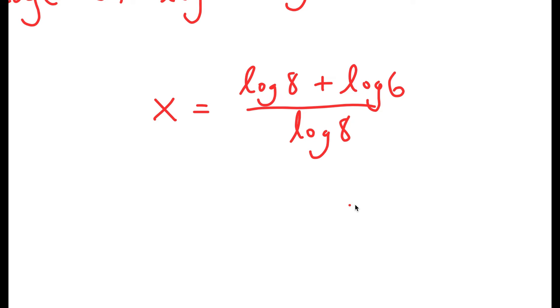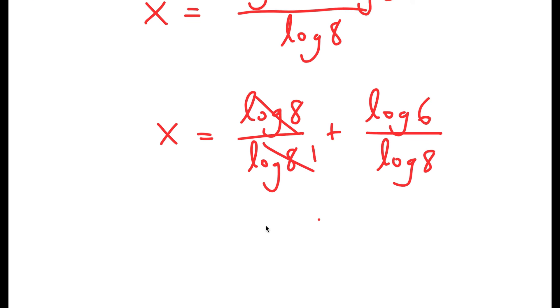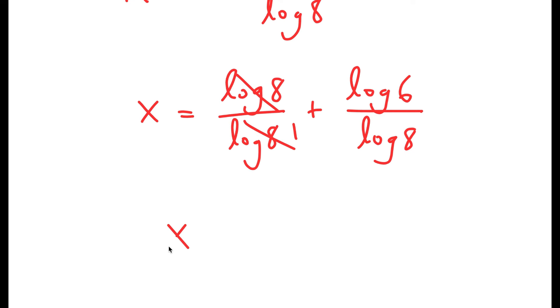Now from here, I can rewrite this as log 8 over log 8 plus log 6 over log 8. Now log 8 and log 8 cancel out to get 1. So I get x is equal to 1 plus log 6 over log 8.